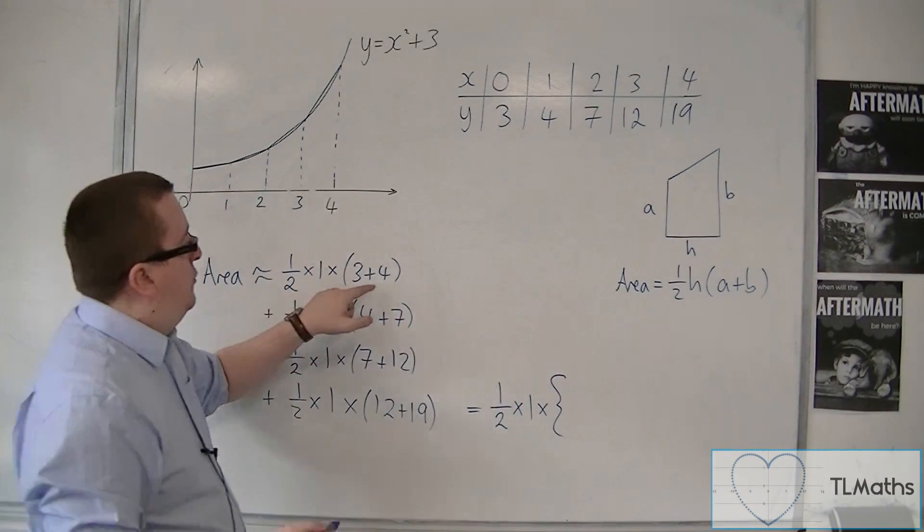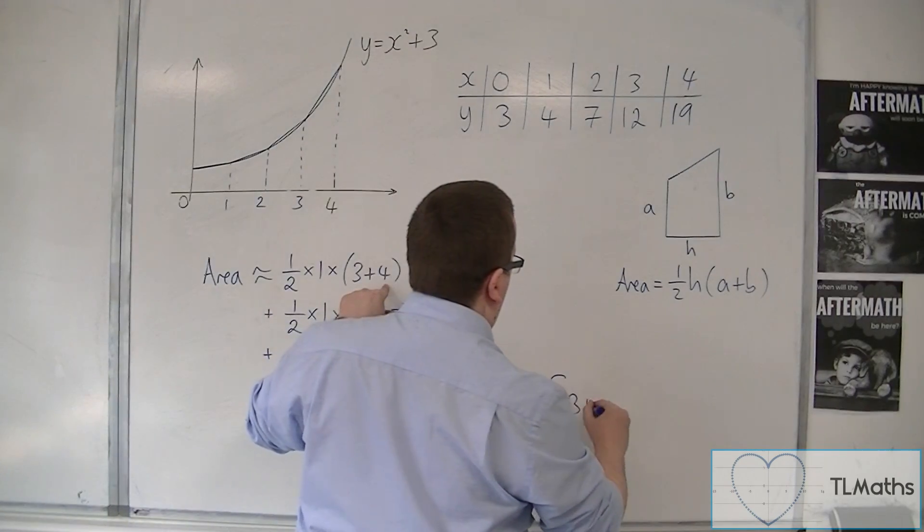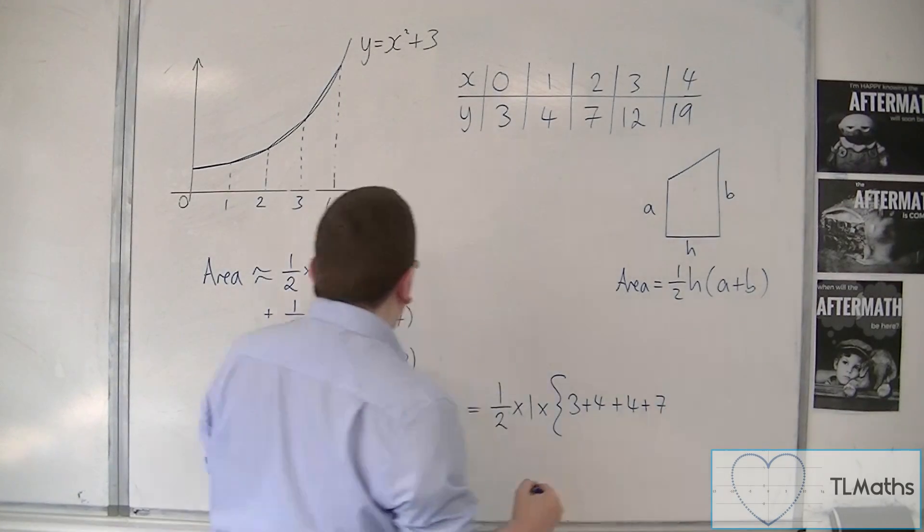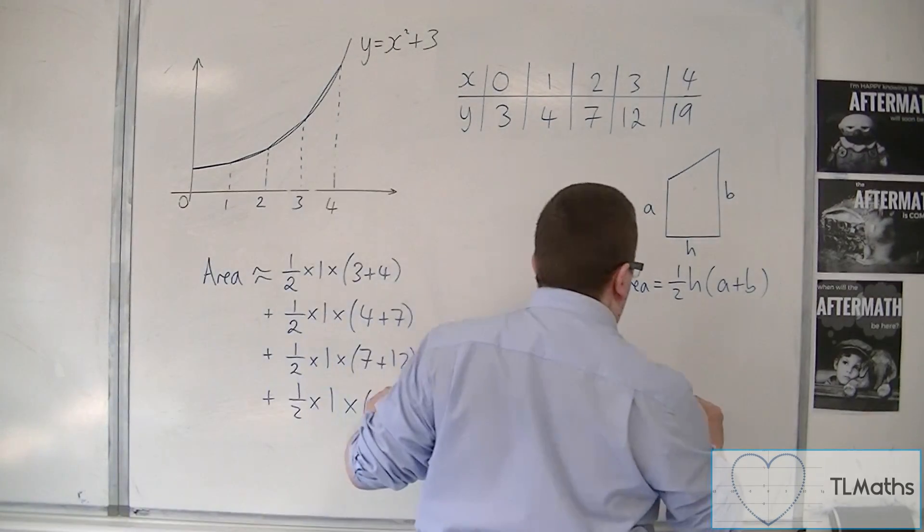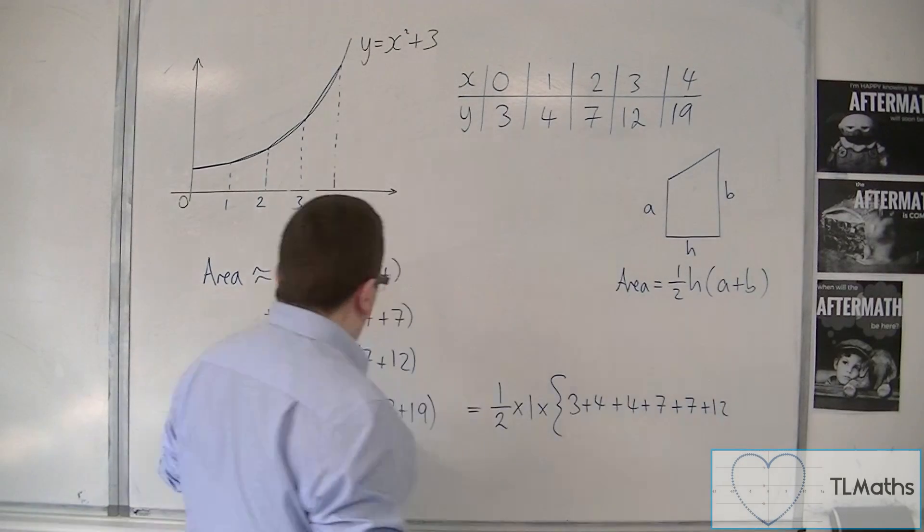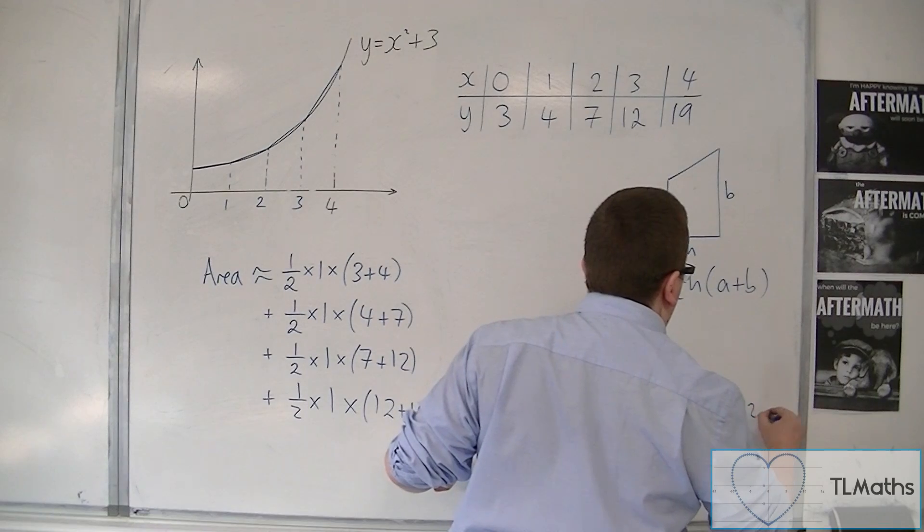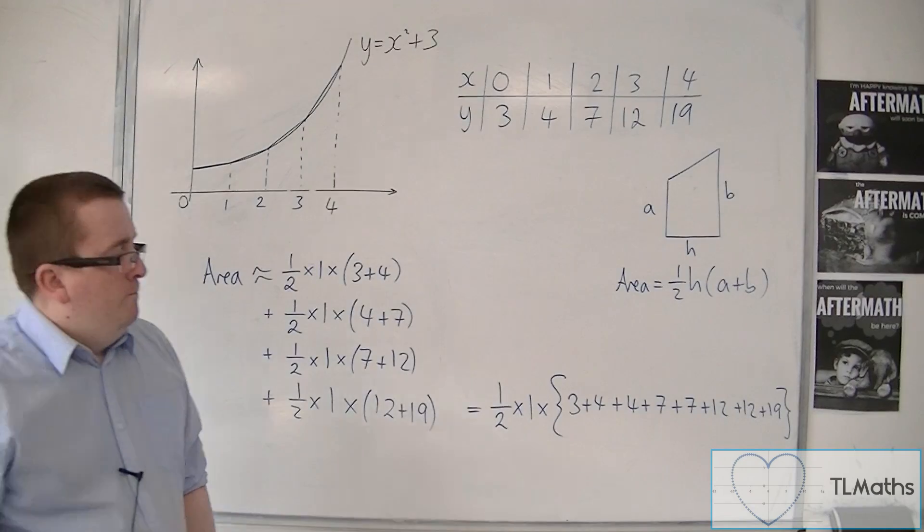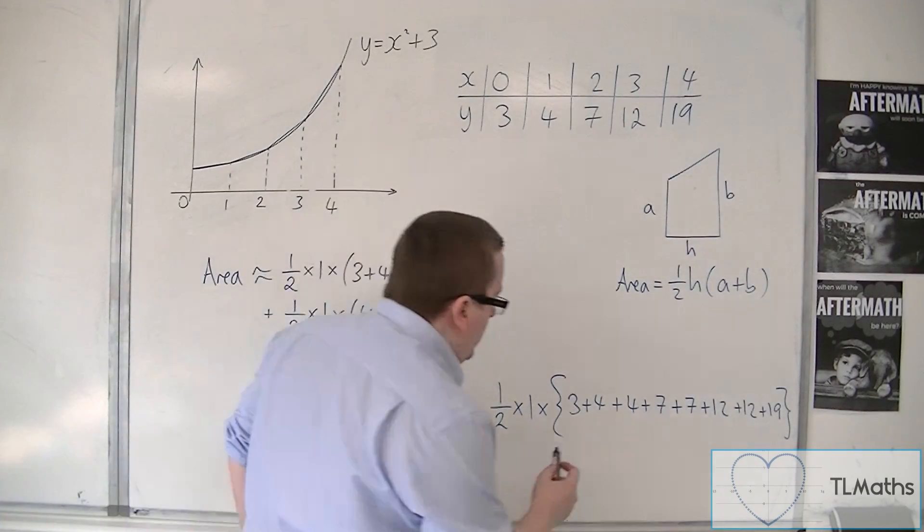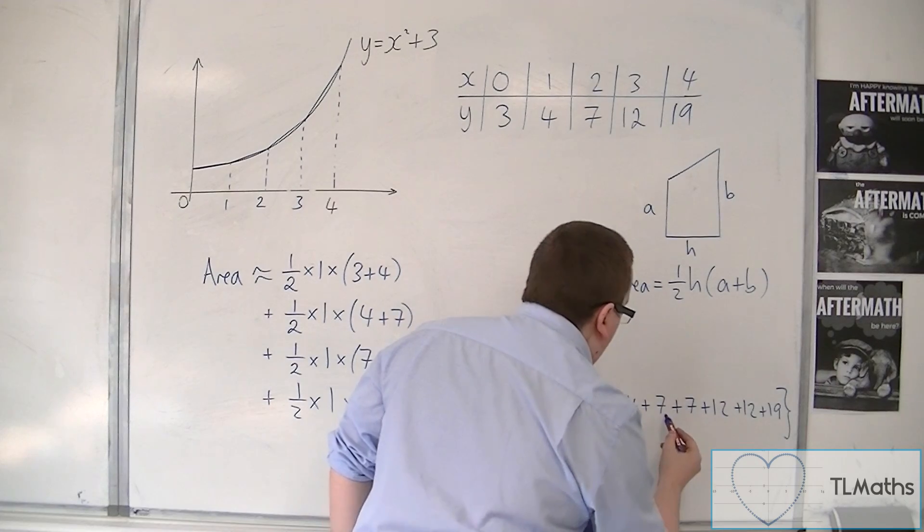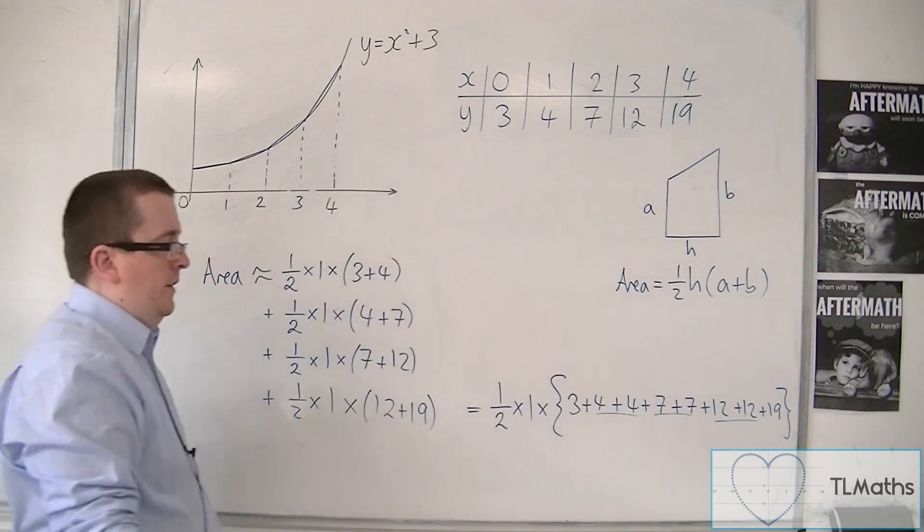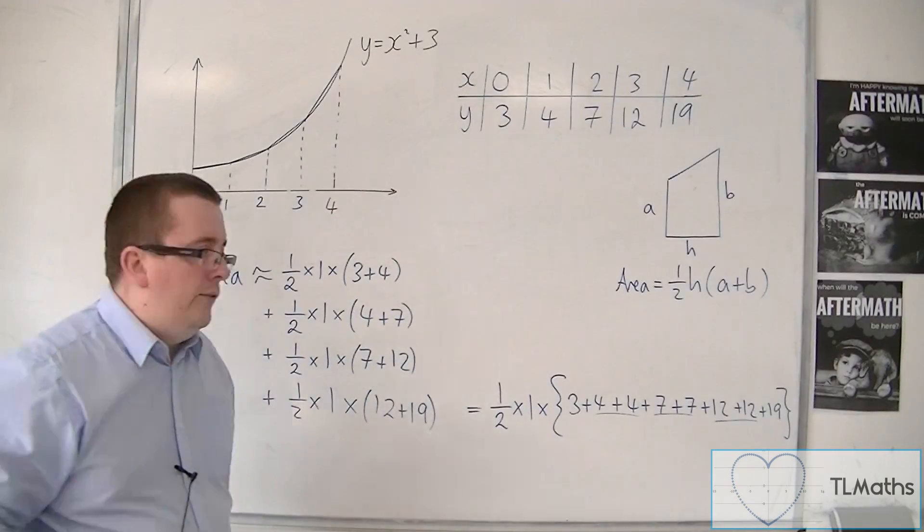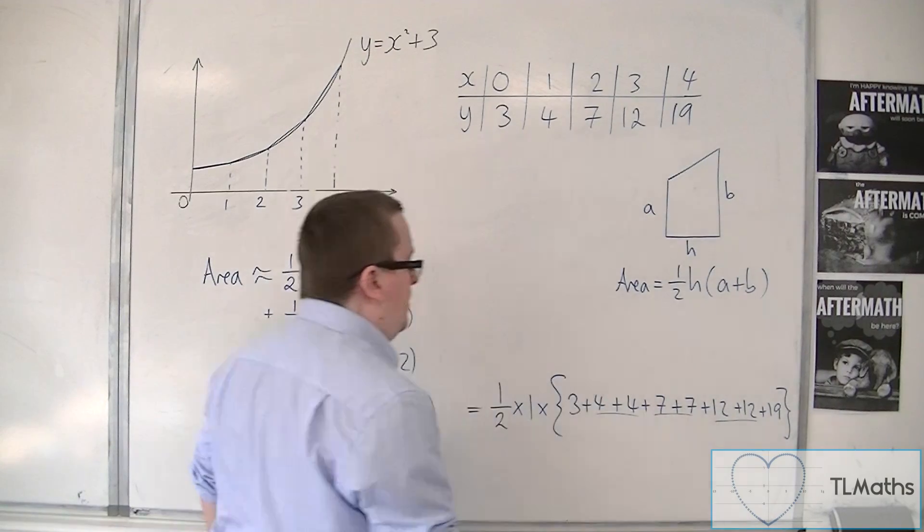And what I've got left is 3 plus 4, plus 4 plus 7, plus 7 plus 12, plus 12 plus 19. Now, we should also be thinking, here I've got 4 coming up twice, and 7, and 12. So, in fact, all of those middle bars appear twice. It's just the end ones that appear once.